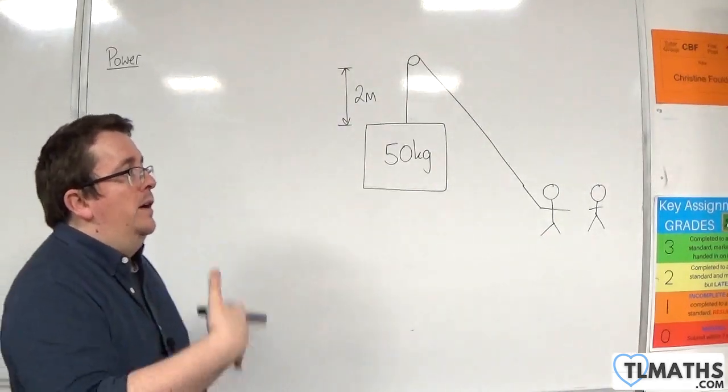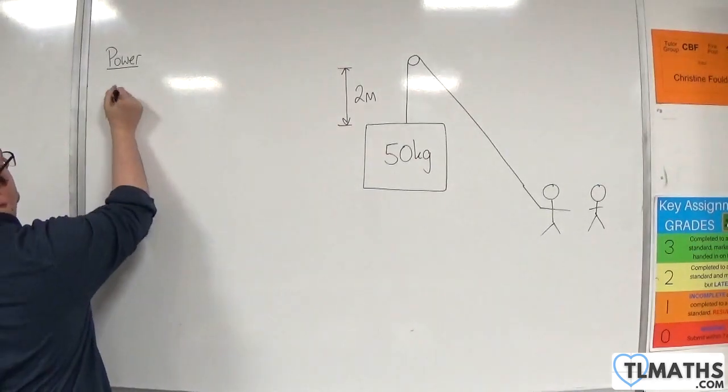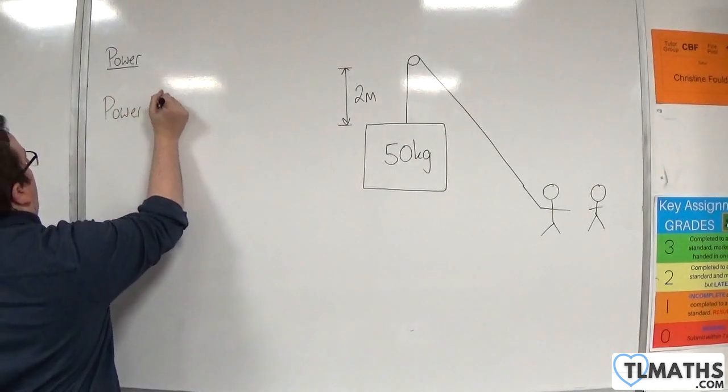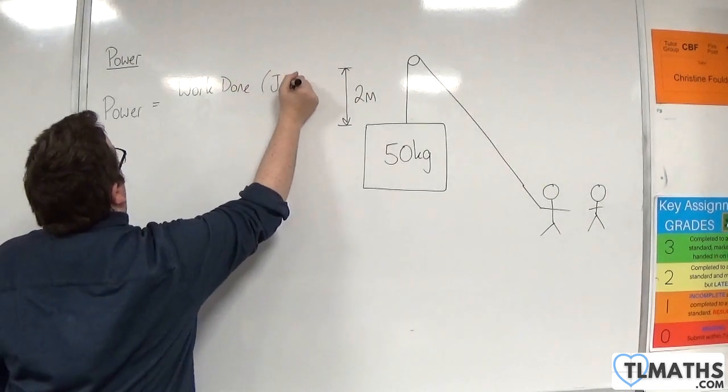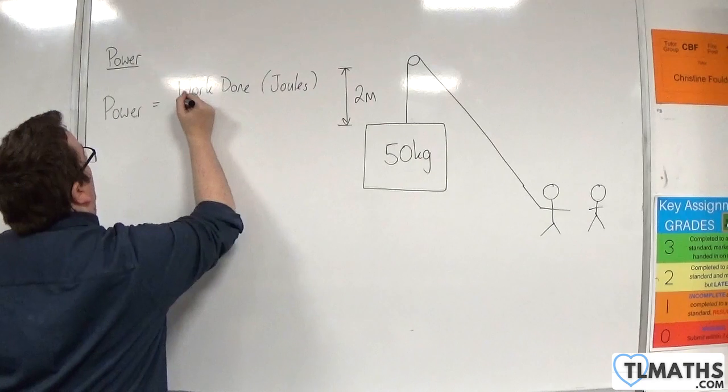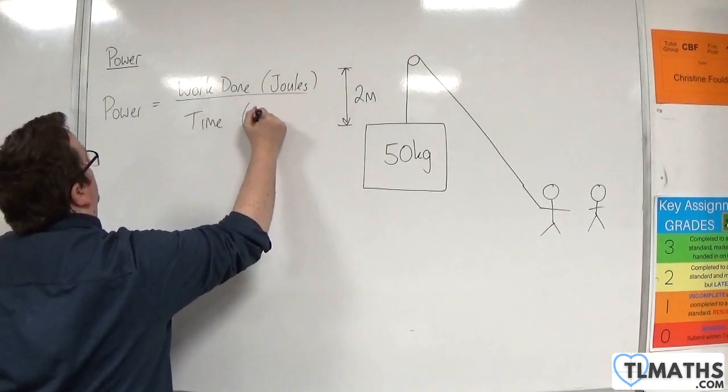So power takes that into account. Now power is the work done which is measured in joules divided by time measured in seconds.